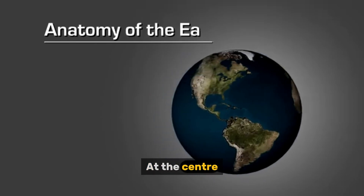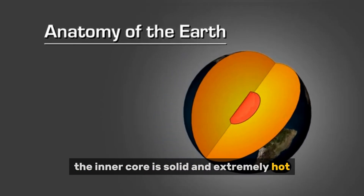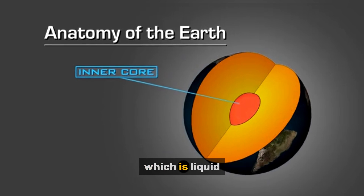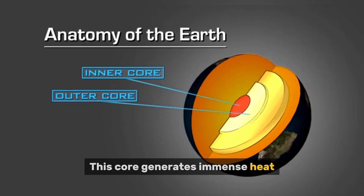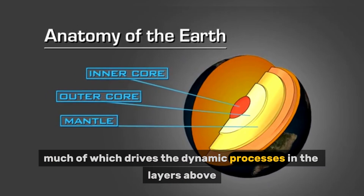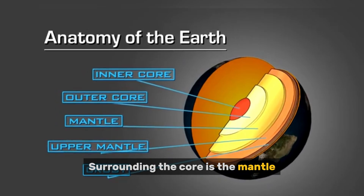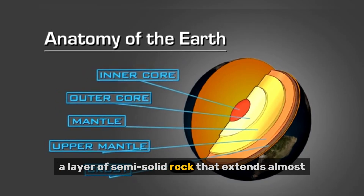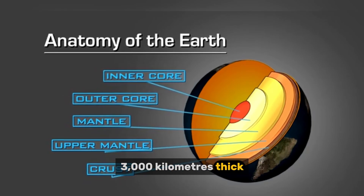At the center, the inner core is solid and extremely hot, surrounded by the outer core, which is liquid. This core generates immense heat, much of which drives the dynamic processes in the layers above. Surrounding the core is the mantle, a layer of semi-solid rock that extends almost 3,000 kilometers thick.